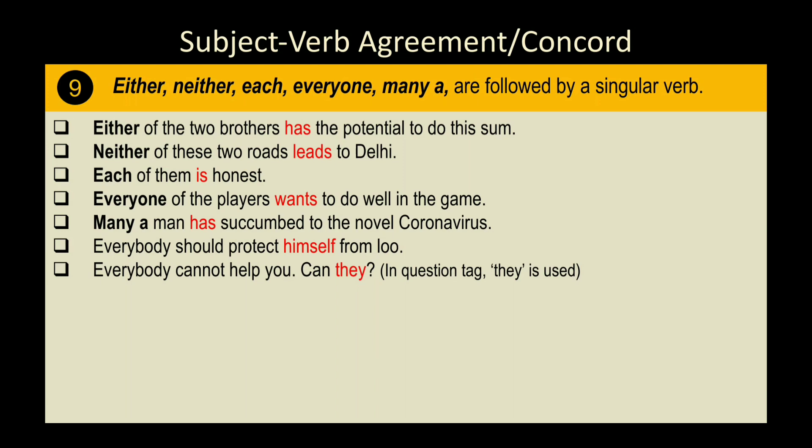Rule 9: 'Either,' 'neither,' 'each,' 'everyone,' and 'many a' are followed by a singular verb. Examples: 'Either of the two brothers has the potential.' 'Neither of these two roads leads to Delhi.' 'Each of them is honest.' 'Every one of the players wants to do well.' 'Many a man has come.' 'Everybody should protect himself from loo.' For question tags after 'everybody,' use 'they': 'Everybody cannot help you, can they?'